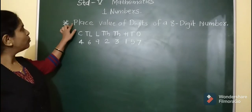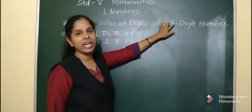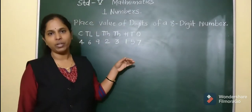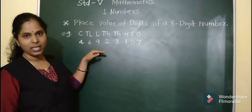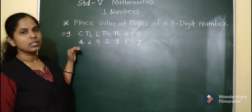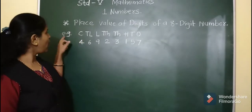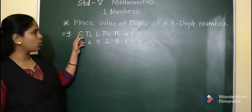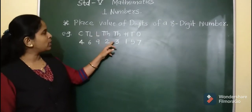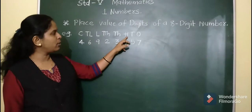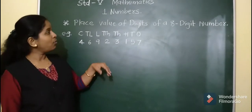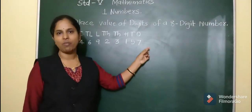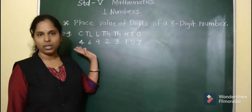Next is place value of digits of an 8-digit number. A 7-digit number starts with the 10 lakhs place, whereas an 8-digit number starts with the crores place. Here is one example. The number is 4,69,23,157 — that is 4 crore 69 lakhs 23 thousand 157. We will find out the place value of each digit.